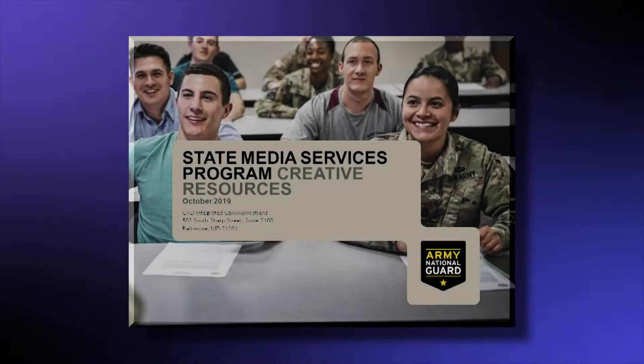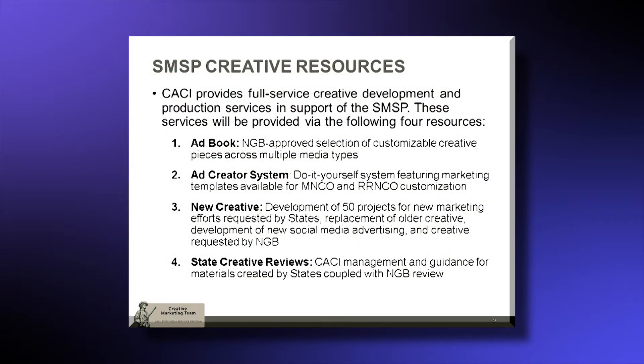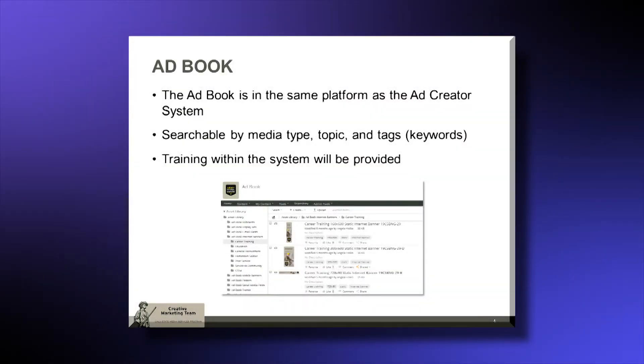To drill down on the State Media Service Program a little bit more, it is made up of four components. The first component is the media purchasing and the media planning, which our buyers can assist you as a marketing NCO in the planning as well as doing the purchase of your product. The second phase is the creative aspect, which is the creating of your ads as well as trafficking those ads to the proper vendors that you need.